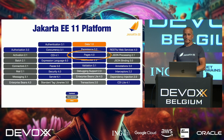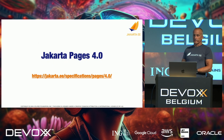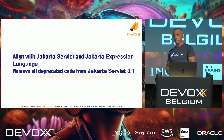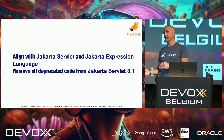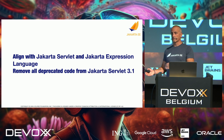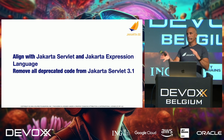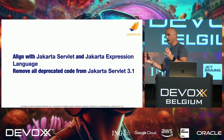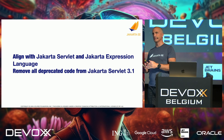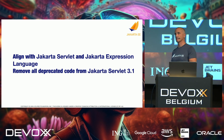For Jakarta Pages, it's a major version 4.0. They align with what's been done in Servlet and Expression Language and remove everything that was deprecated in version 3.1. This follows the new release cycle pattern in Jakarta EE: deprecate things in a minor release, then remove them in the subsequent major release.